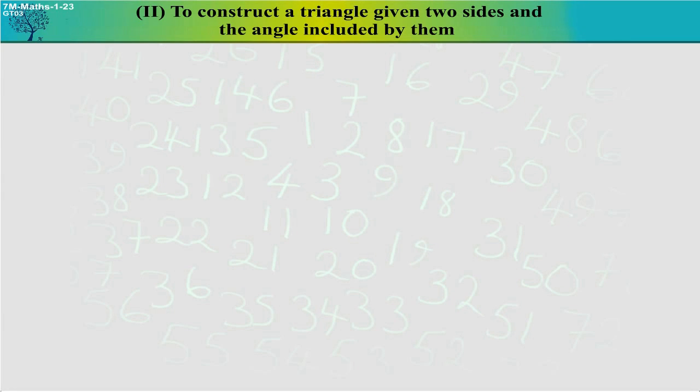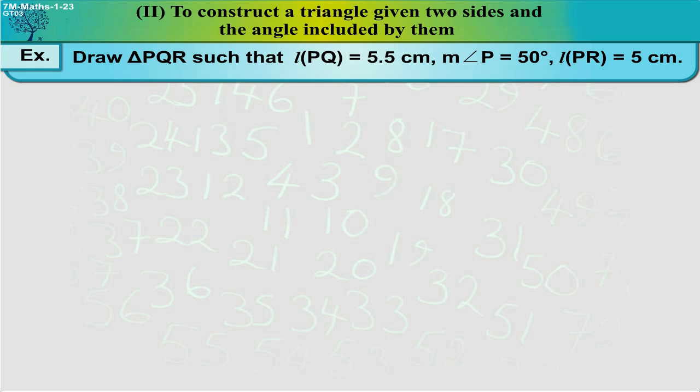To construct a triangle given two sides and the angle included by them. Draw a triangle PQR such that length of PQ is equal to 5.5 cm, measure of angle P is equal to 50 degrees, length of PR is equal to 5 cm.